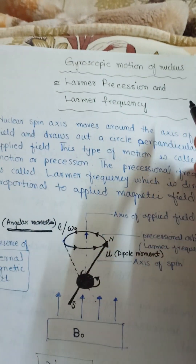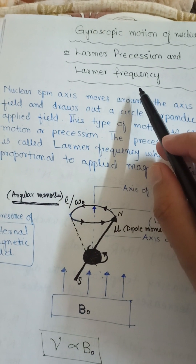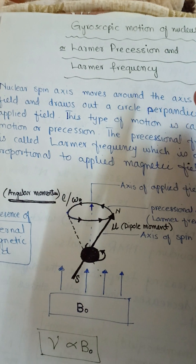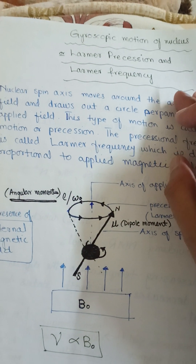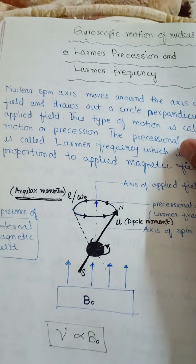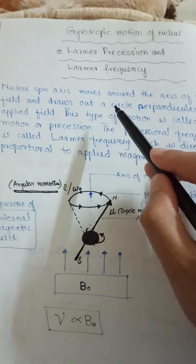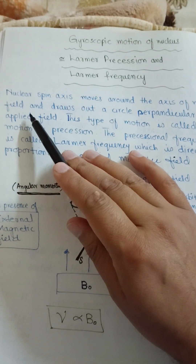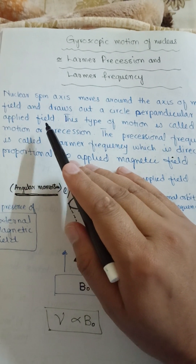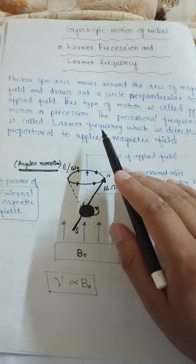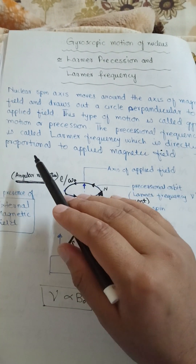Now, what is gyroscopic motion of a nucleus, also known as Larmor precession and Larmor frequency? When electromagnetic radiation is in resonance with the Larmor frequency, nuclear magnetic signals are produced. The nuclear spin axis moves around the axis of the magnetic field and draws out a circle perpendicular to the applied field. This type of motion is called gyroscopic motion or precession, and the precessional frequency is called Larmor frequency, which is directly proportional to the applied magnetic field.